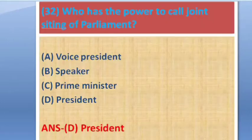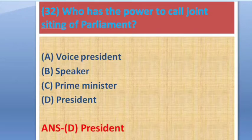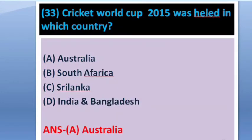Question number 32: Who has the power to call a joint sitting of Parliament? Options: A — House President, B — Speaker, C — Prime Minister, D — President.